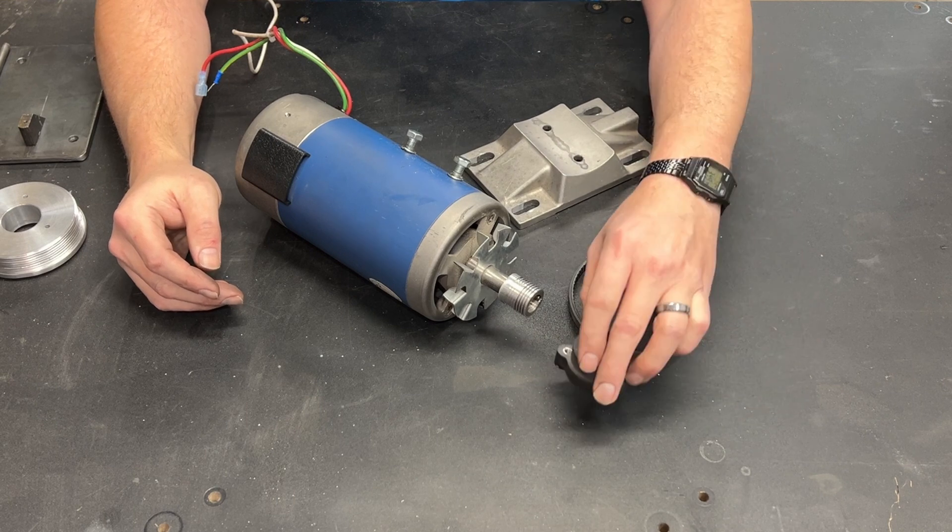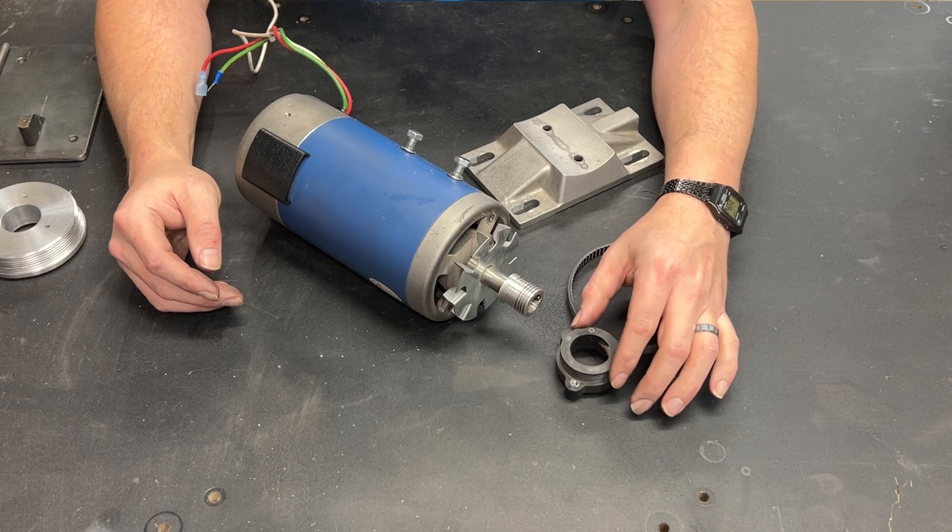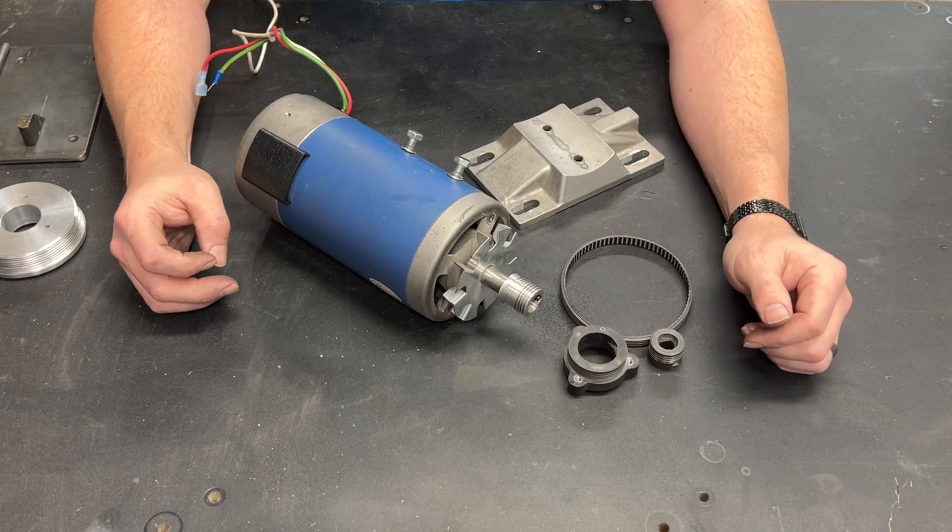So this is the gears that originally came on this bandsaw. This is the motor drive gear, and this plastic gear is what fits on the bandsaw wheel.